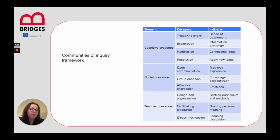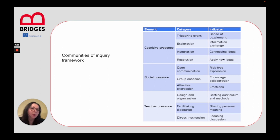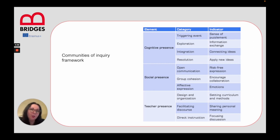Social presence also can consist of different stages, and as we move forward, the main aim would be, for instance, the affective expression. The teacher presence — the final aim of teacher presence would be to direct the instruction.